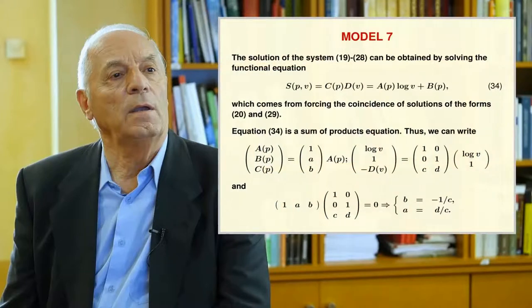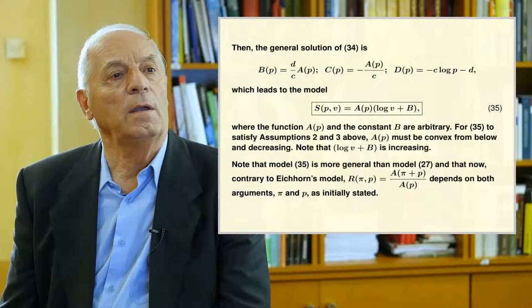Model 7 includes Assumptions 1 and 4. The solution of the system of equations 19 and 28 is obtained by solving functional equation 34, which forces both solutions in 20 and 29 to be compatible. Equation 34 is a sum-of-product equation, so using the well-known theorem we write three equations at the bottom of the slide. The general solution of 34 leads to Model 35, where the A function and the constant B are arbitrary. For Model 35 to satisfy Assumptions 2 and 3, A must be convex from below and decreasing. Note that Model 35 is more general than Model 27, and now R depends on both arguments Pi and P.